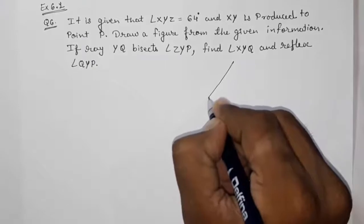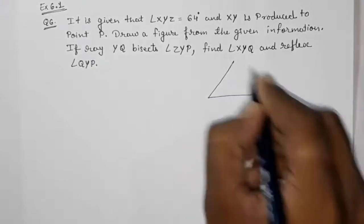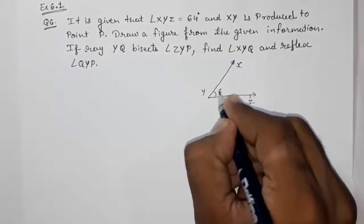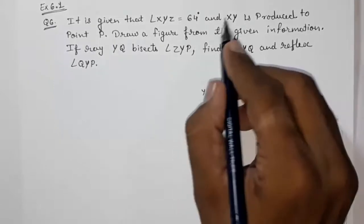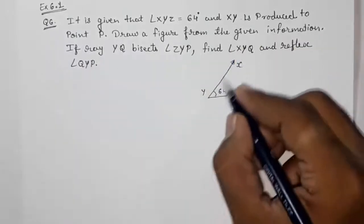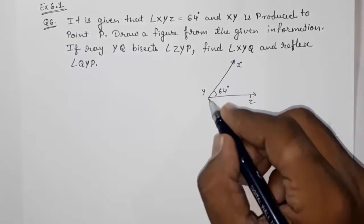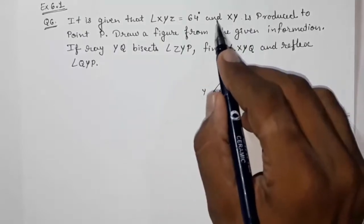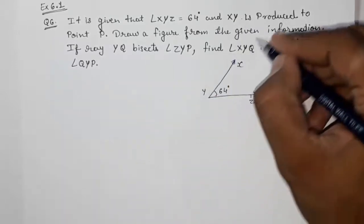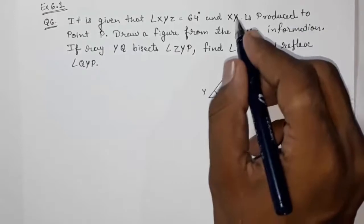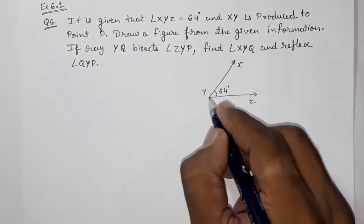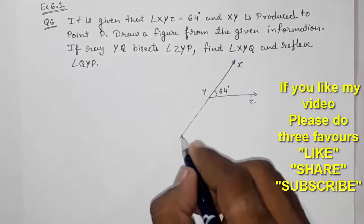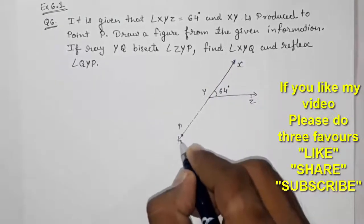So I am going to draw this XYZ that is 64 degrees. Then XY is produced to point P means this XY is produced to point P. So we have to extend it on that side. If they told us that YX is produced to point P then we have to extend on that side. But now they have told you that XY is produced, so we have to extend this on this side XY is produced to point P. So this will be our point P.